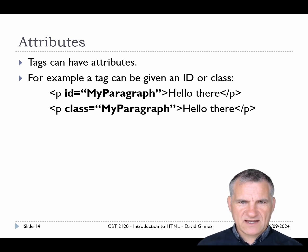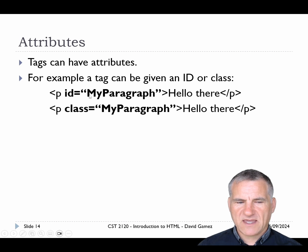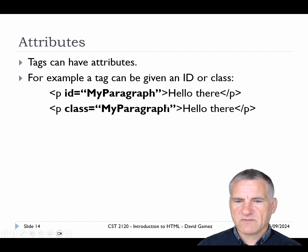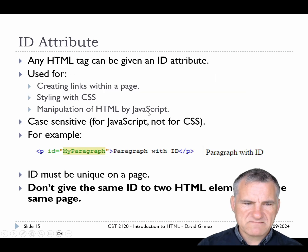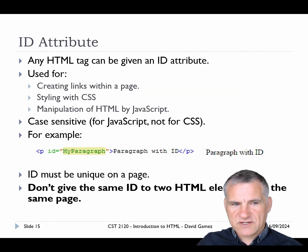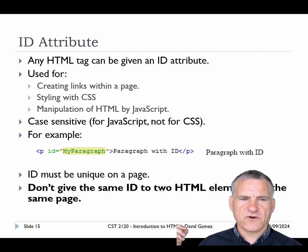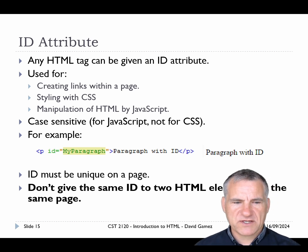Those are the basic tags or elements. These tags can also have attributes. Here we've given it an ID attribute — you have the attribute name, equals, and then in quotation marks the value. ID and class are very common attributes. IDs are useful for creating links in a page, styling with CSS, or manipulating HTML with JavaScript.